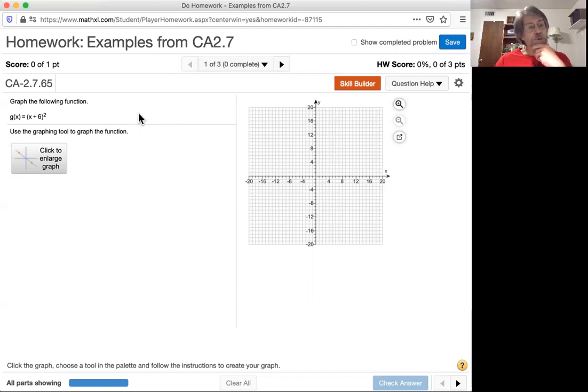So here's a very nice example. Graph the following function, and it's defined by g of x equal the quantity x plus 6 squared. Now, if you're at the point in an algebra class where you've looked at transformations of graphs, you should recognize that this graph will be similar in shape to a more basic graph from what we sometimes call the library of functions. Y equal x squared would be the equation, and that would be the graph of a parabola.